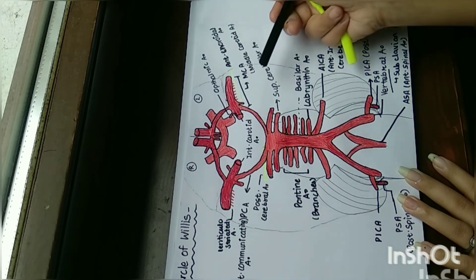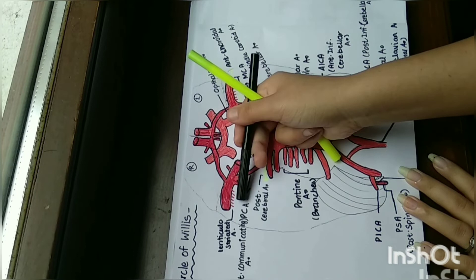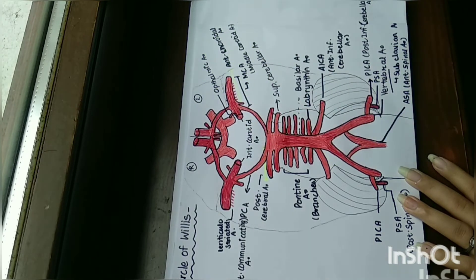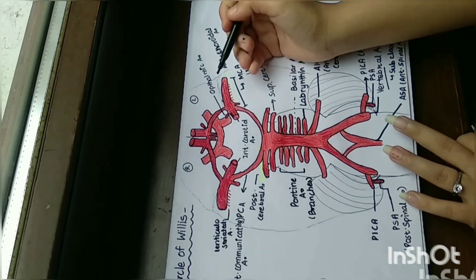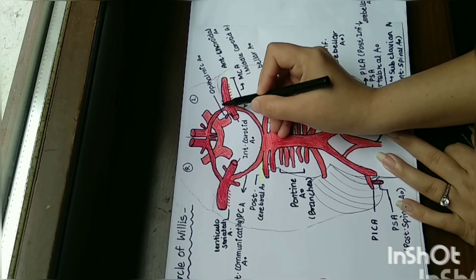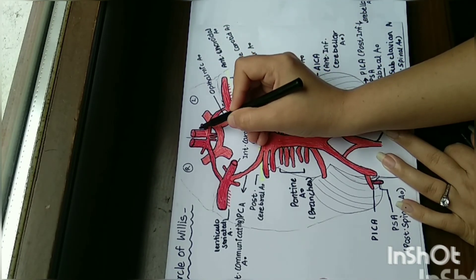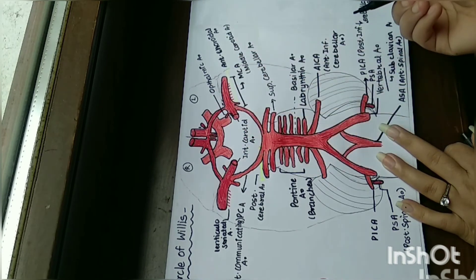Here are the small arteries, which are lenticulostriate arteries that supply blood to the internal capsule and the lentiform nucleus. From here to here, there is the anterior cerebral artery.